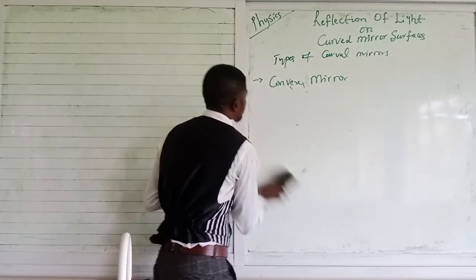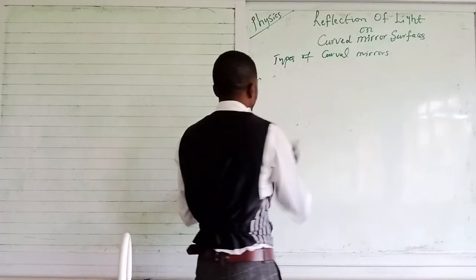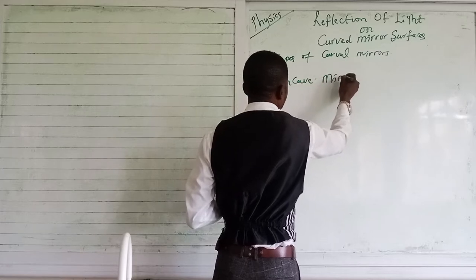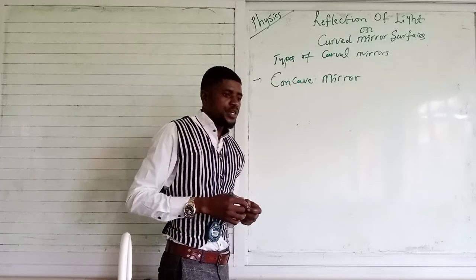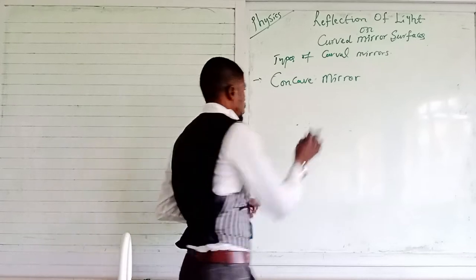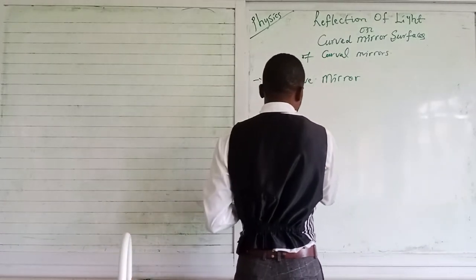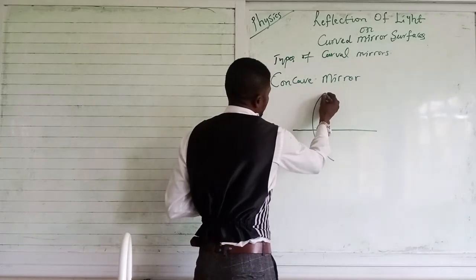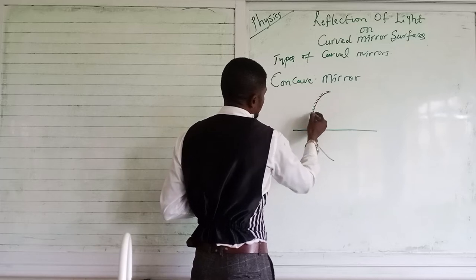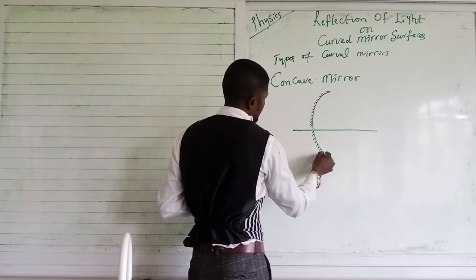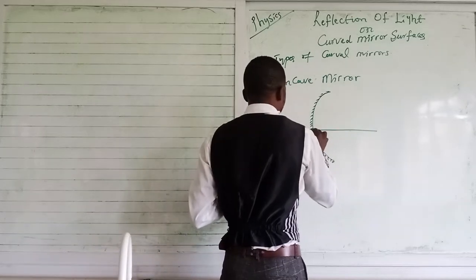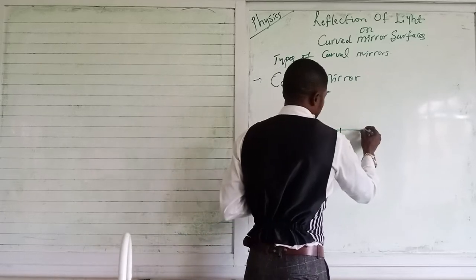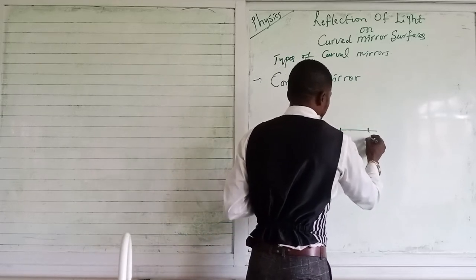The next mirror we have is the concave mirror. The concave mirror is also known as the converging mirror. For the concave mirror, the reflecting side is on the inside. This point is the pole of the mirror, here is the focal point F, and somewhere here is the center of curvature C.